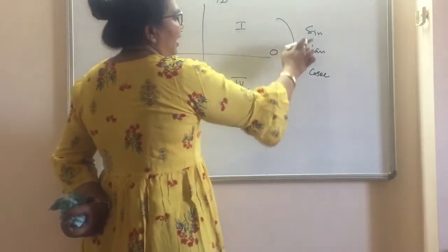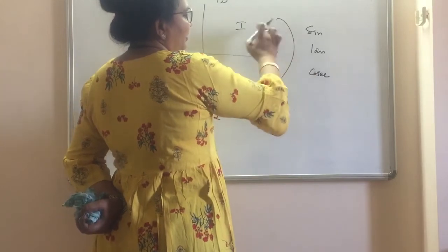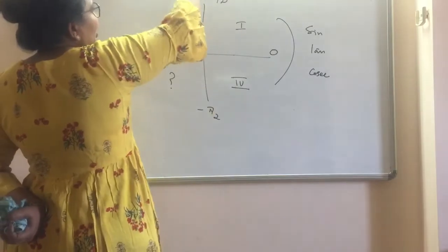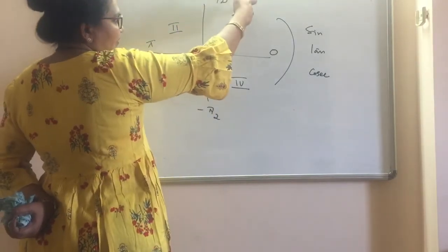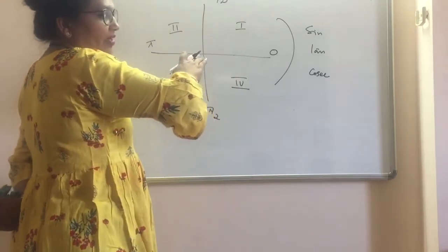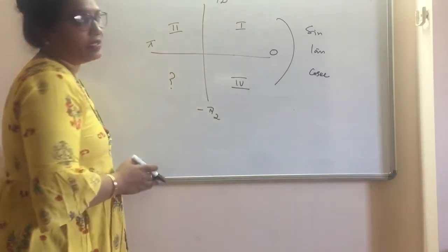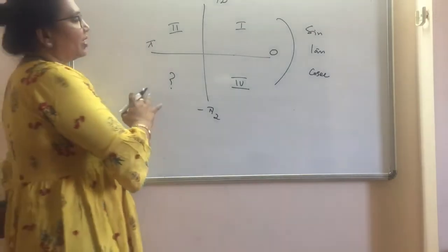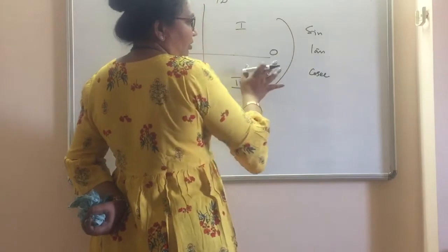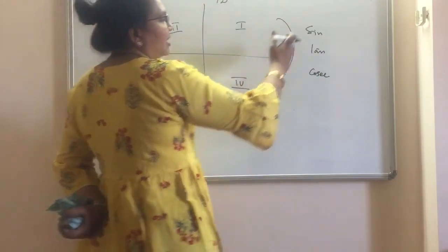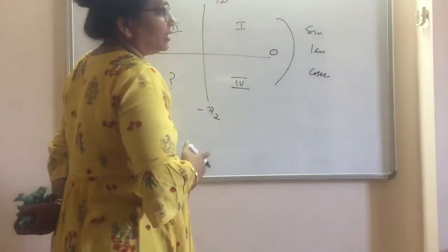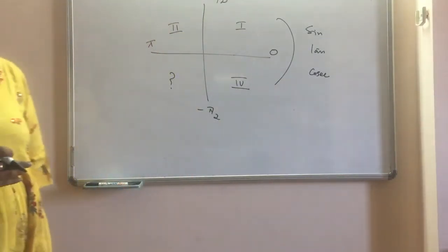So sine, tan, and cosec are positive in the first quadrant, negative in the fourth quadrant. Same way, cos, sec, and cot are positive in the first quadrant, negative in the second quadrant. So either plus or minus according to which quadrant we will take. So here, this is very important: sine, tan, and cosec stay together with the same formula, and cos, sec, and cot stay together. This is a very important point to be remembered.